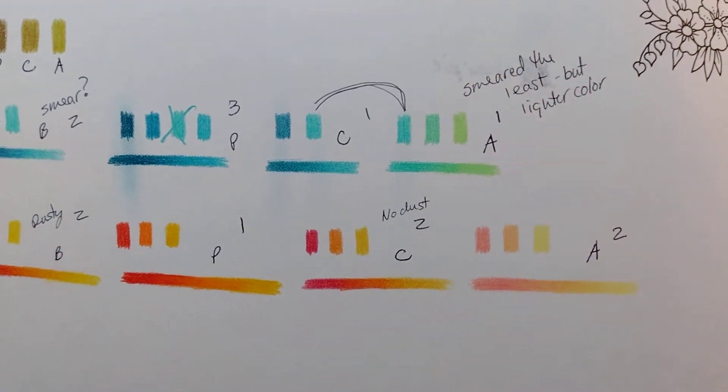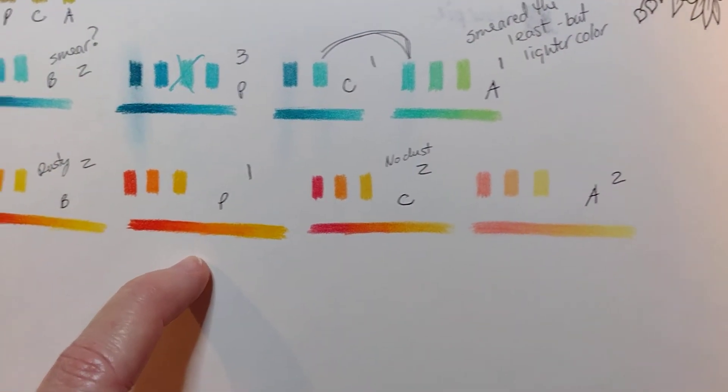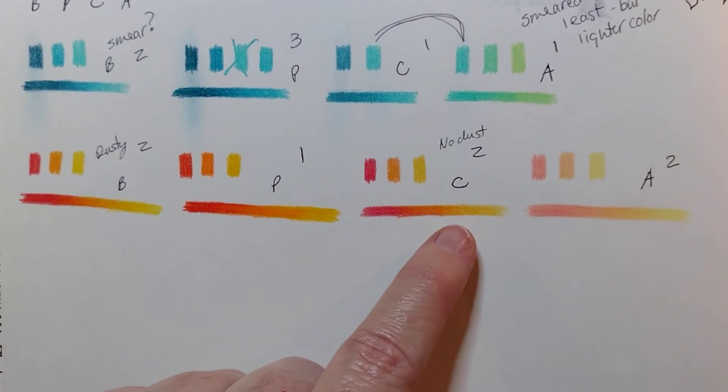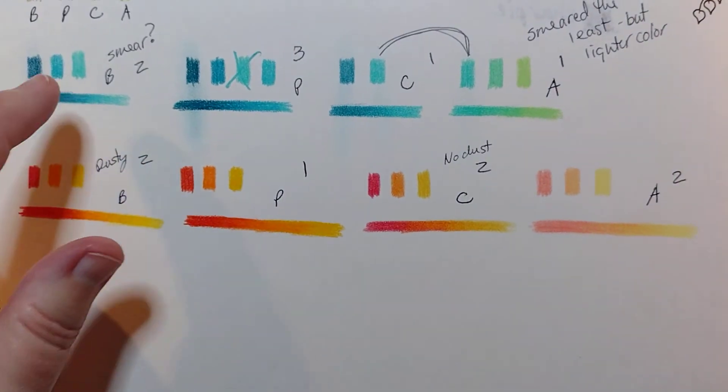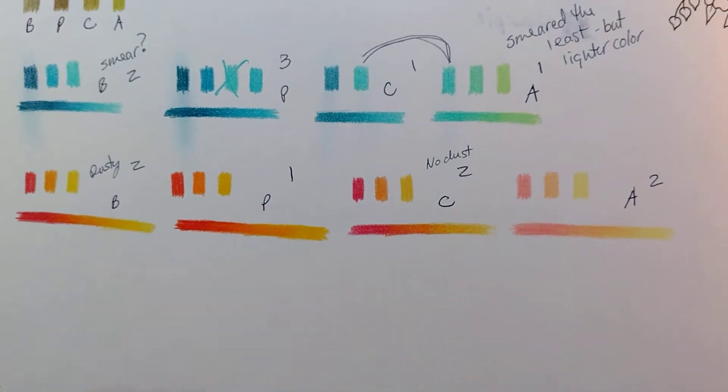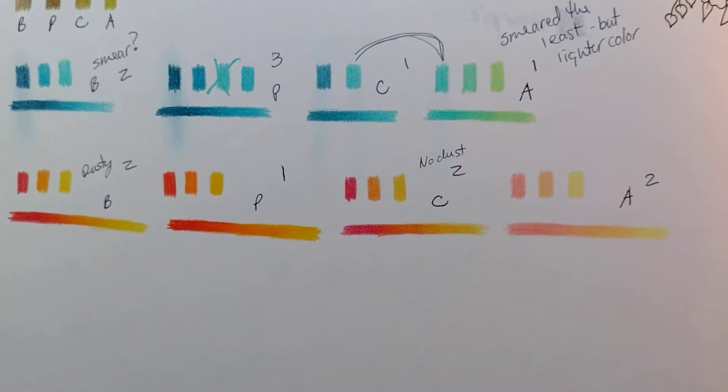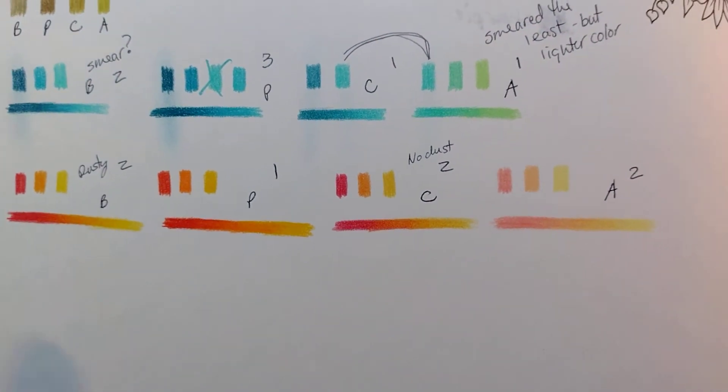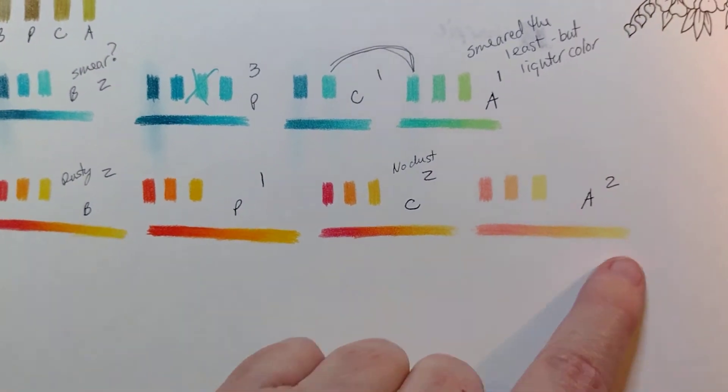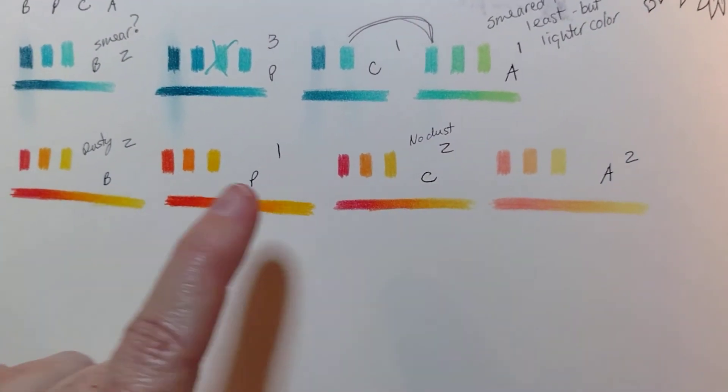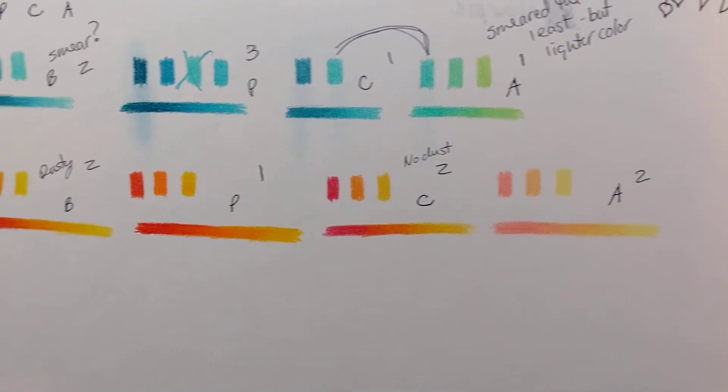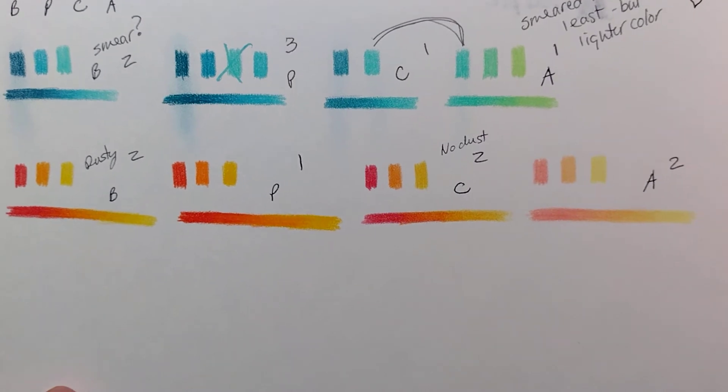For these colors, Brutfuner scored second. I was using the mushy color there, scored third. I think that mushy color skewed my results a lot. Here you can see with different colors, Prismacolor scored first here. The Brutfuners are always very dusty, it seems like. They were really dusty here. Prismacolor was the clear winner. These were all just about the same.